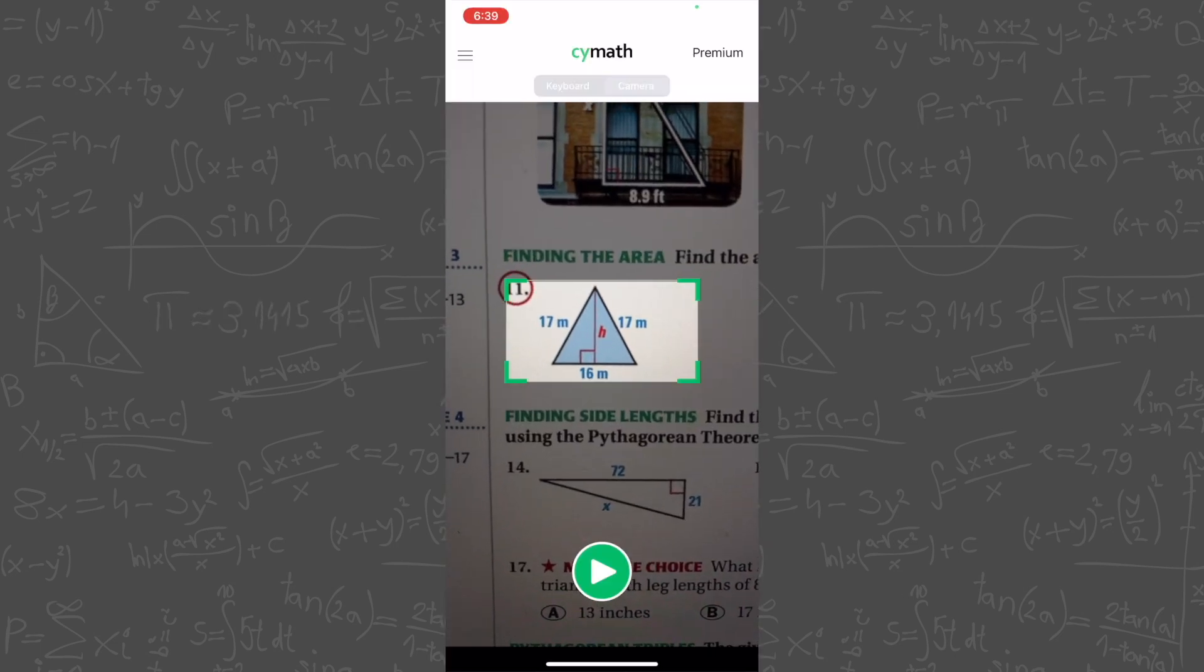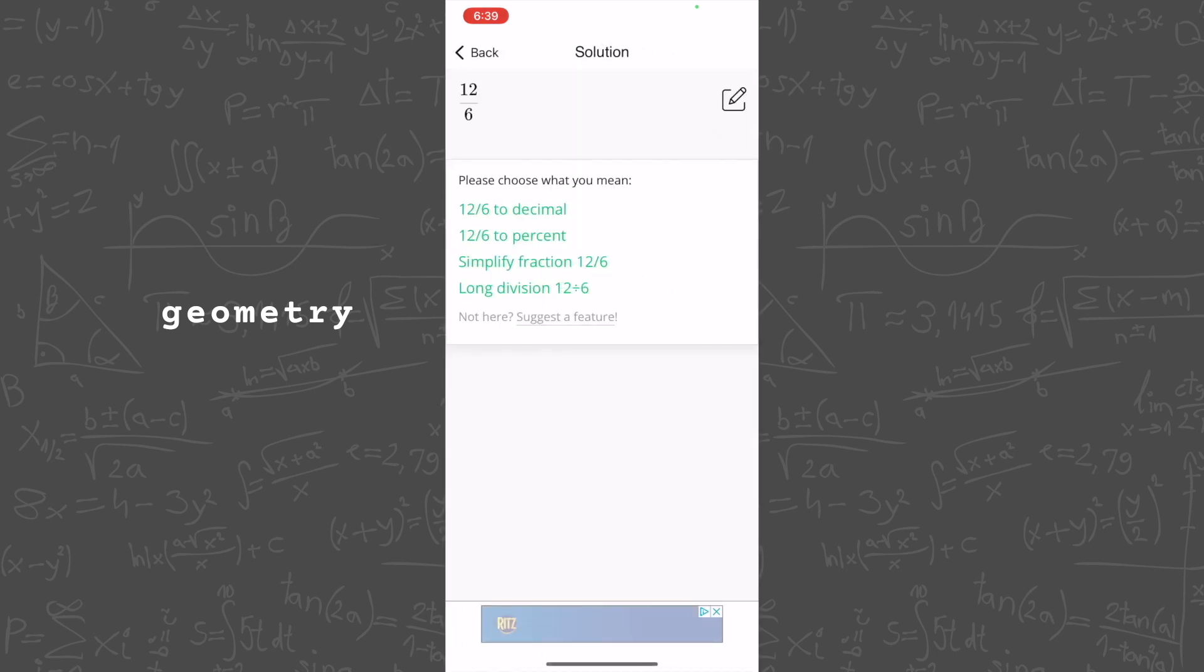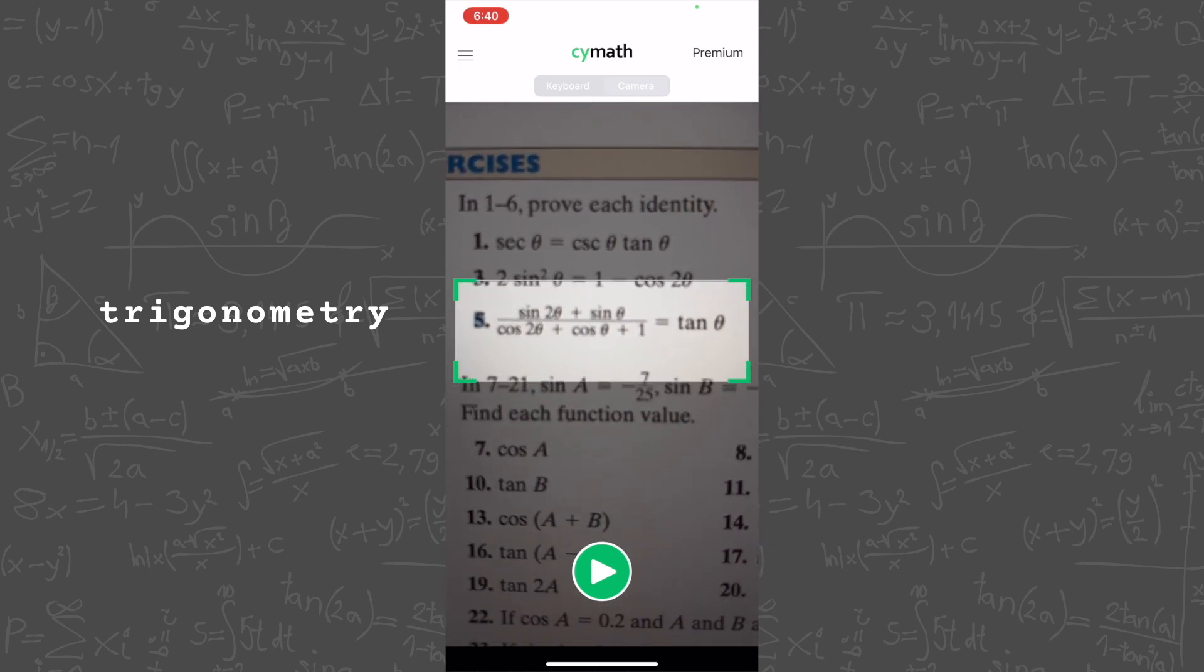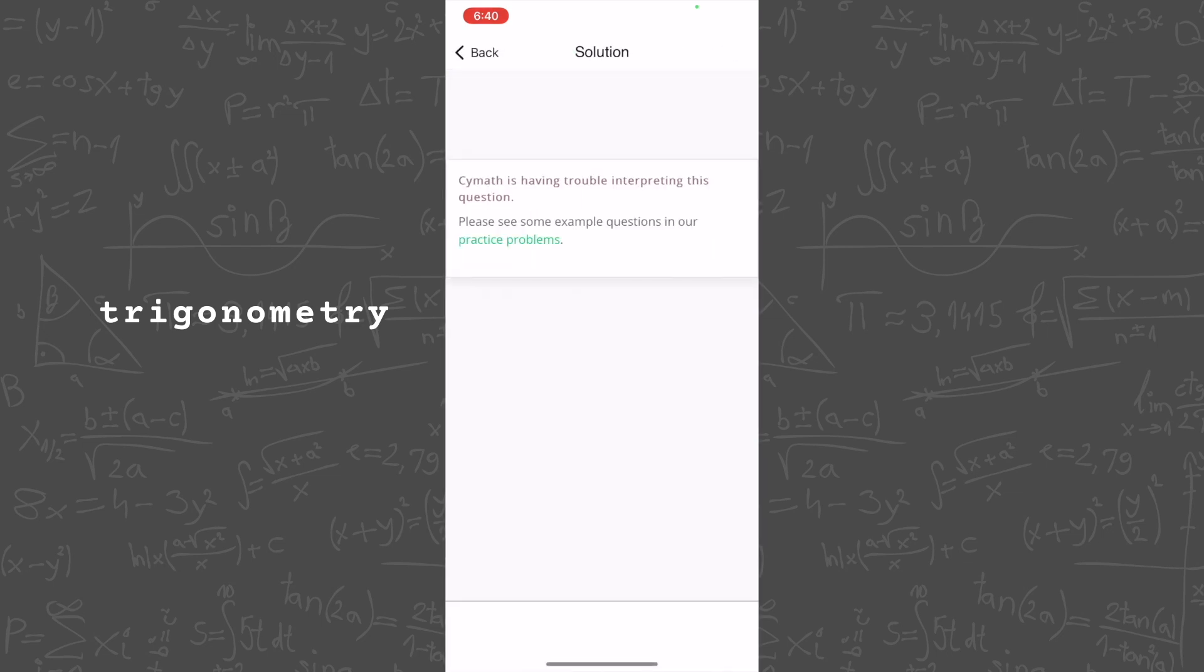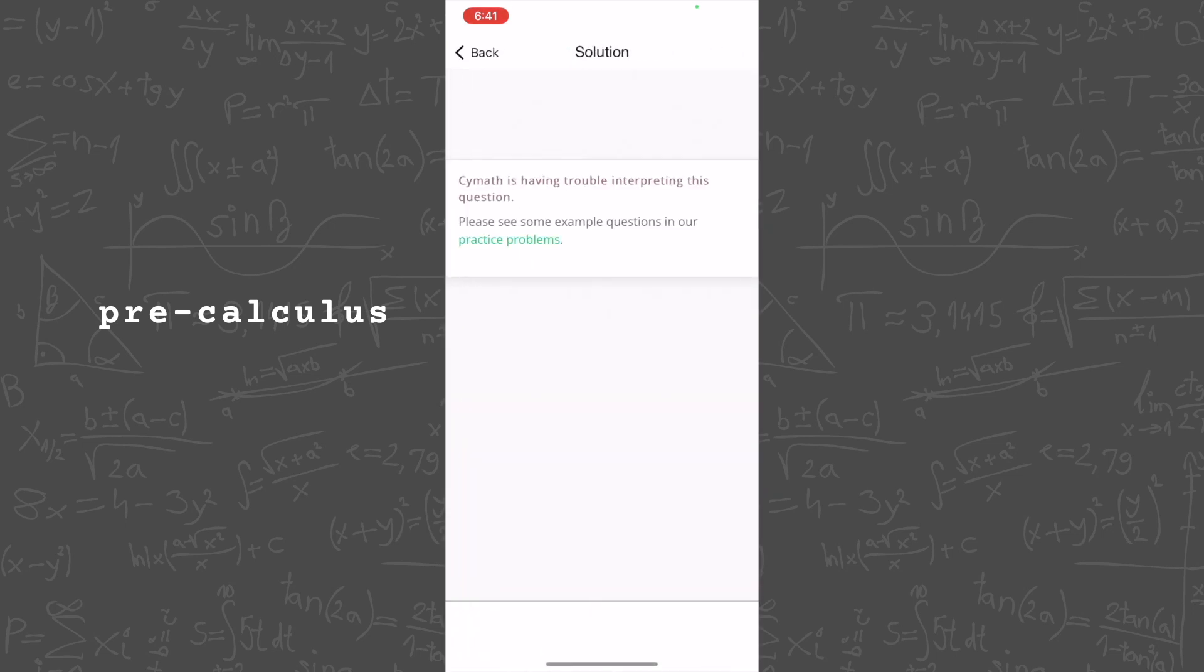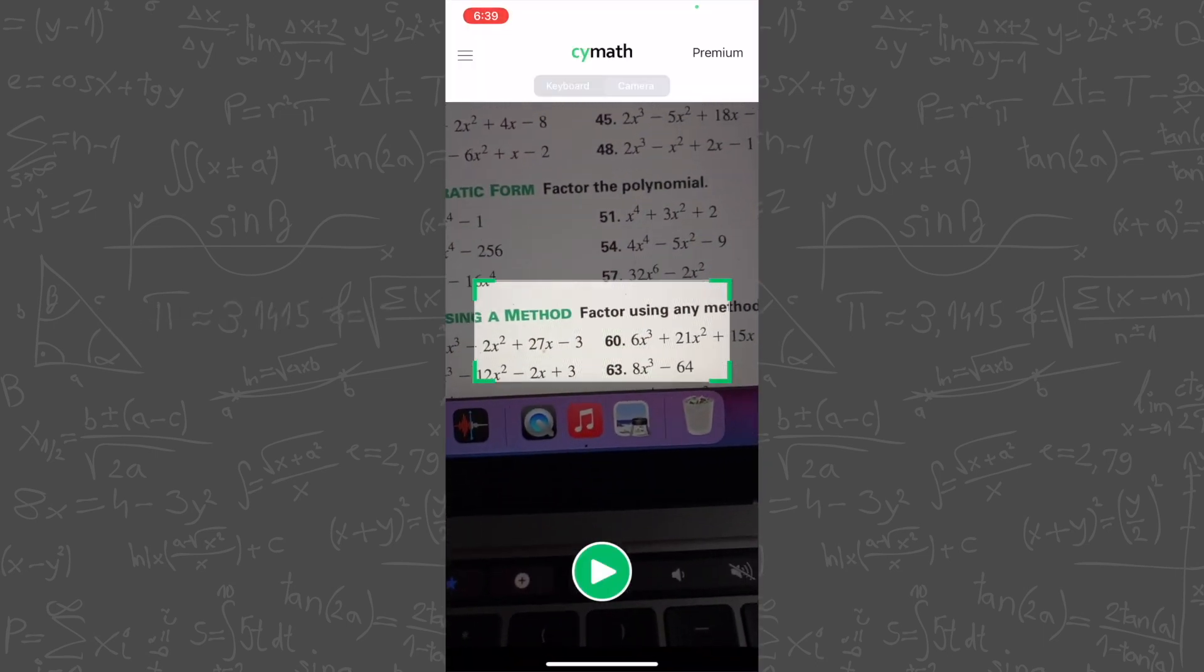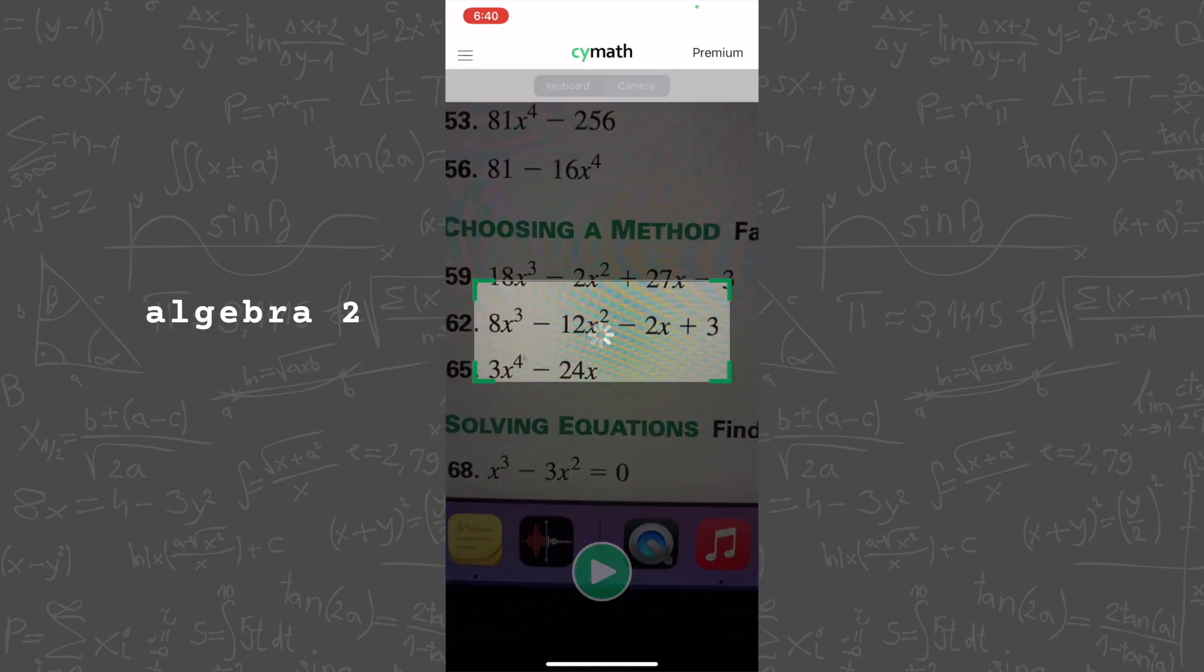I also tried different problems for geometry, trig, and pre-calc, but it wasn't able to pick up a lot of the problems with diagrams or special notation, so pretty much anything that wasn't a straight-up equation, it couldn't pick up. I know a lot of other apps have trouble with geometry, so I'll give Scimath a pass on that, but it couldn't pick up trig identities or matrices either, which I know other apps do pick up on. That was a little disappointing, but it did redeem itself a little bit when I tried out Algebra 2 and calculus problems.